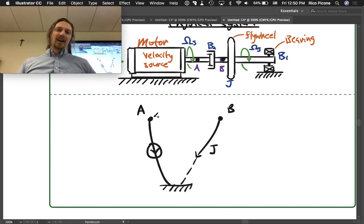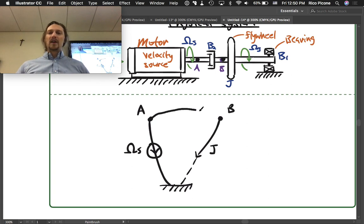Then we've got somehow this velocity source ωs gets connected up to B. It does that through this drag cup, so this is our B2.